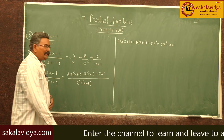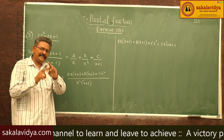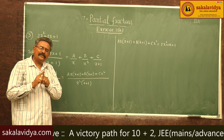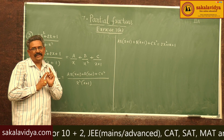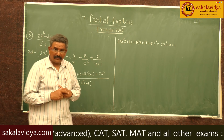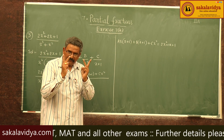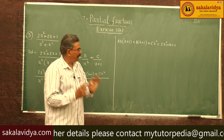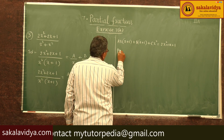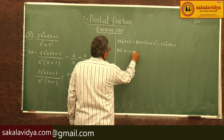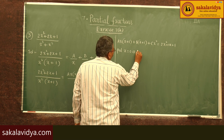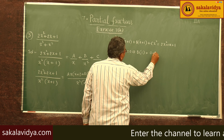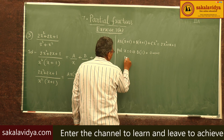The two linear factors are x and x+1. The zero of x is 0, and the zero of x+1 is -1. So we make two substitutions. Put x = 0: the A and C terms become 0, leaving B(0+1) = 1, so B = 1.